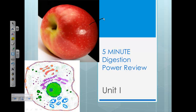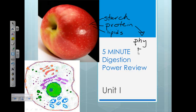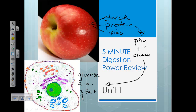A quick reminder about the whole purpose of having a digestive system: to take the big macromolecules — the main ones in our food are starch, proteins, and lipids — and physically and chemically digest these macromolecules to produce the subunits glucose, amino acids, and three fatty acids and glycerol from our lipids. We want to get these subunits so they can fit inside our cells to allow our cells to survive and do everything they need to keep us alive.